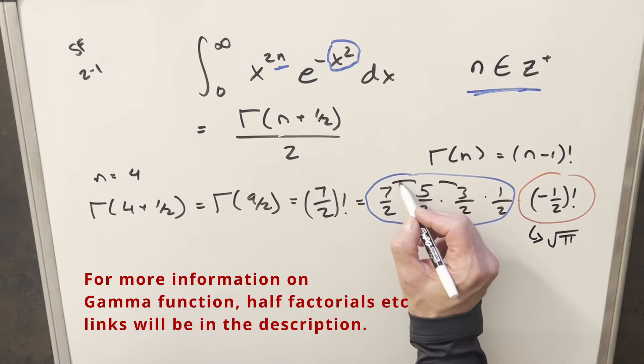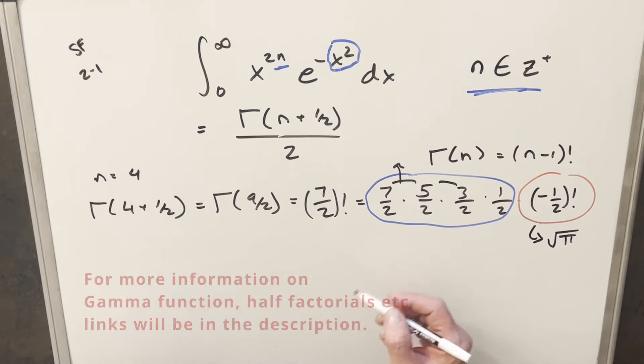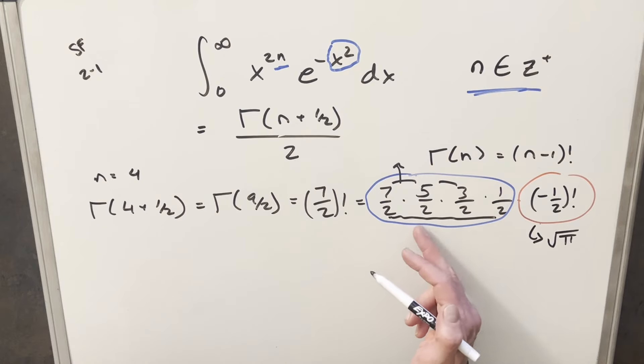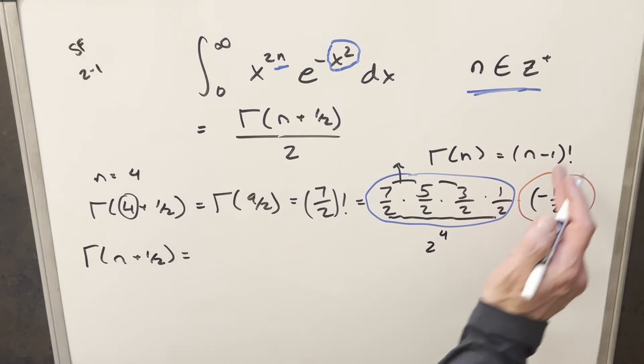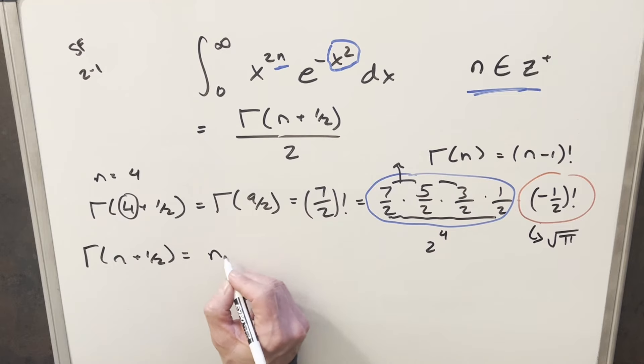But you can kind of see we have this pattern where we're just decreasing by 2 here. So what we can do actually with this numerator is write this in terms of a double factorial. And then also we notice in the denominator with the number of 2s, it's the same as this number here, 4. We actually have 4 terms. So we could actually write this here as 2 to the 4. So using this and getting back to our gamma of n plus 1 half, this is actually going to be the same. Using this definition, this is going to be the same thing as n minus 1 half factorial. But then just getting a common denominator here, writing this as 2 over 2 here, so we have 2n over 2. I could actually express this as 2n minus 1 over 2 factorial.